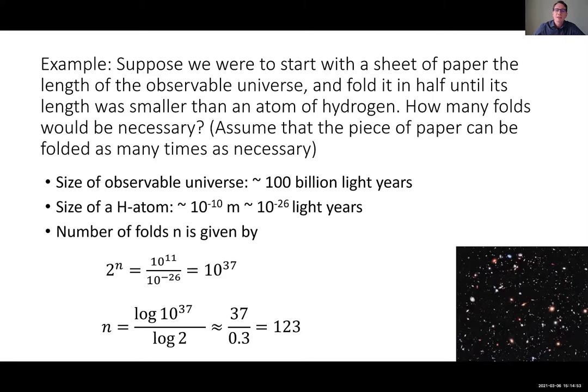Here is an example of one of the questions discussed this morning: suppose we were to start with a sheet of paper the length of the observable universe and fold it in half until the length was smaller than a hydrogen atom — how many folds do you need? You need some knowledge of natural quantities: the size of the universe is between 10 and 100 billion light years, related to the size of the cosmic microwave background, and the hydrogen atom is about 10⁻¹⁰ meters, or one angstrom.